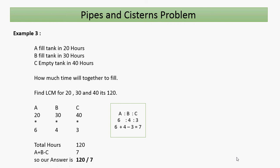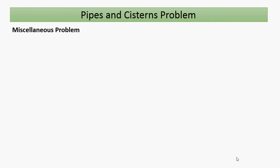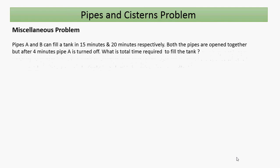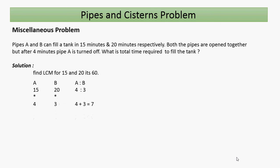Now a miscellaneous problem: Pipe A and B can fill a tank in 50 and 20 minutes respectively. Both pipes are open together, but after 4 minutes pipe A is turned off. What is the total time required to fill the tank? First find the LCM of 50 and 20, which is 100. So A's ratio is 2 and B's ratio is 5.